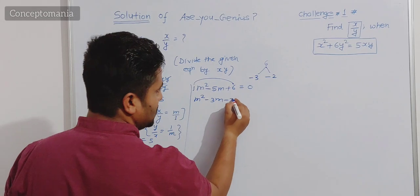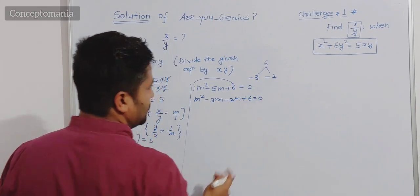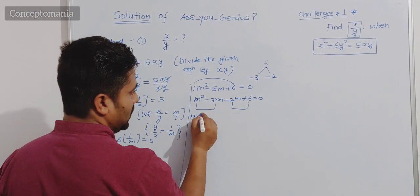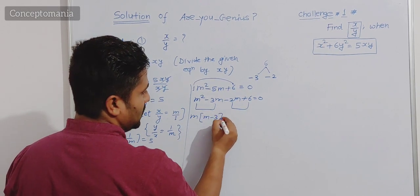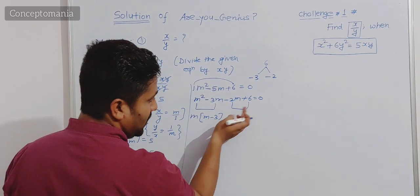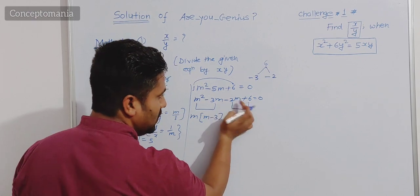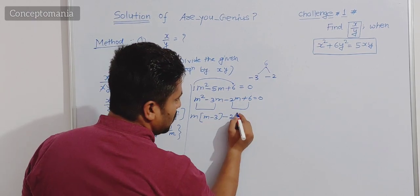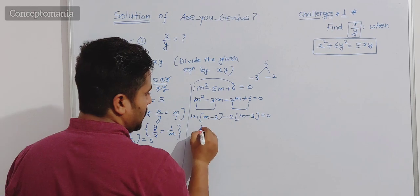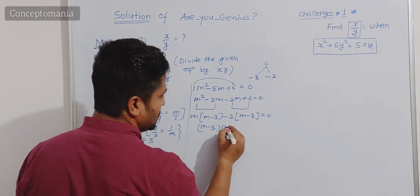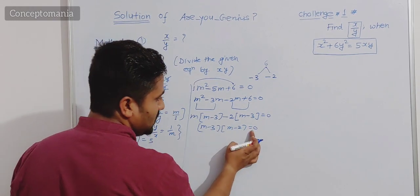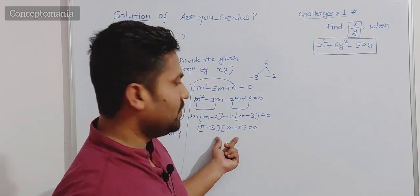So m square minus 5m plus 6 equals zero becomes m square minus 3m minus 2m plus 6 equals zero. Taking common pair-wise: m(m minus 3) minus 2(m minus 3) equals zero. So (m minus 3)(m minus 2) equals zero. If the product of two numbers is zero, then any one of them must be zero.